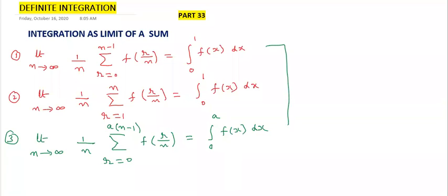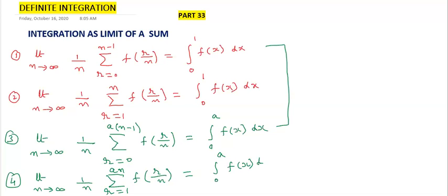Fourth one: limit n tends to infinity 1 by n sigma r equals 1 to a times n, f of r by n. This equals integration 0 to a f of x dx. Observe the relation between these two. These are the four standard results.